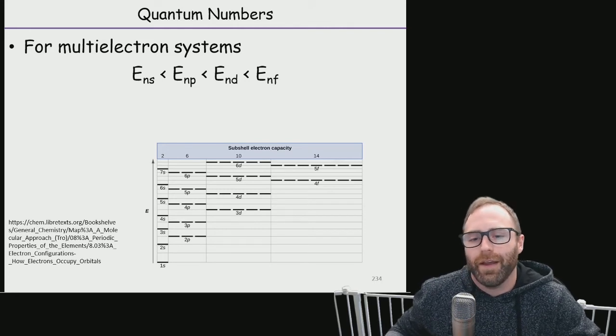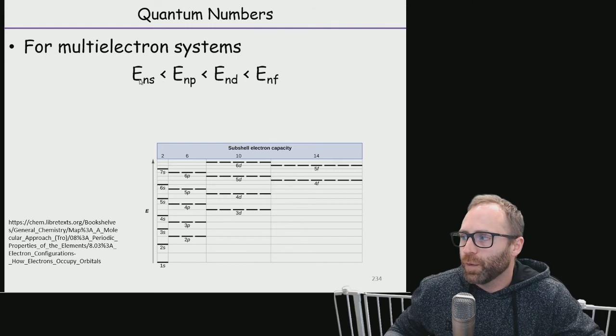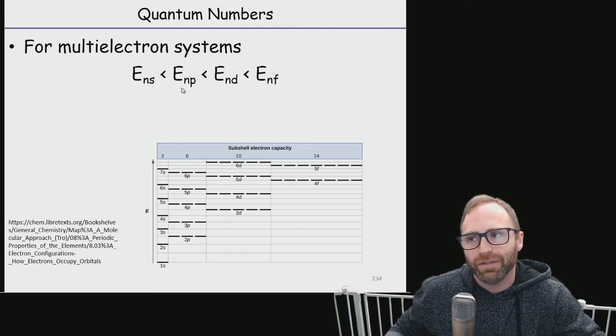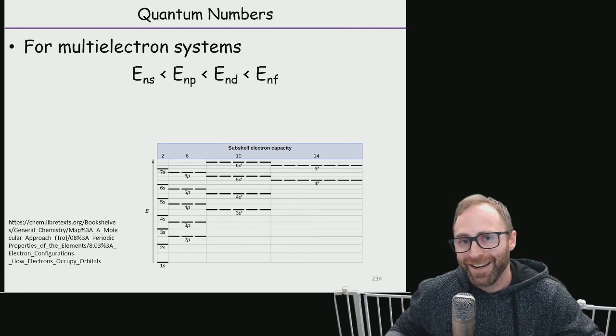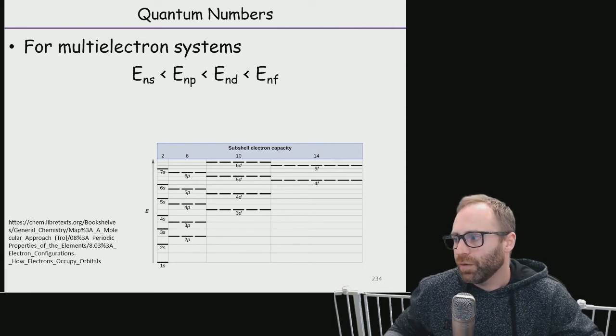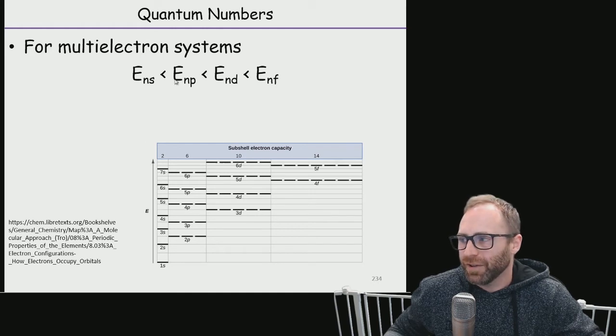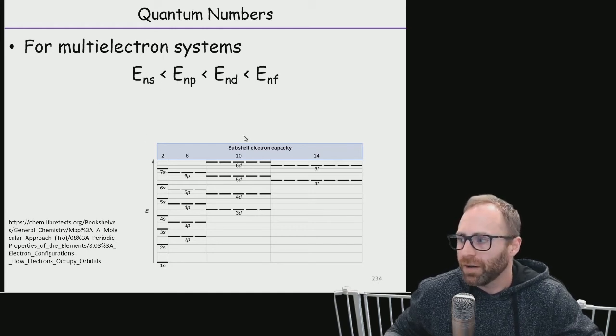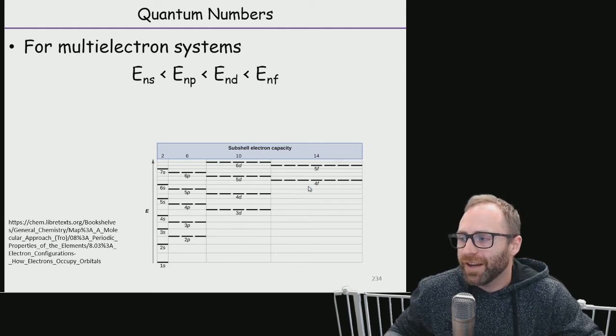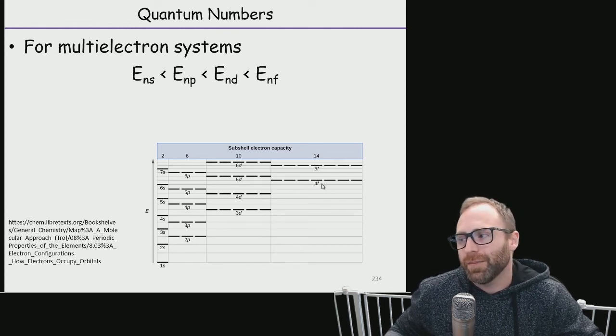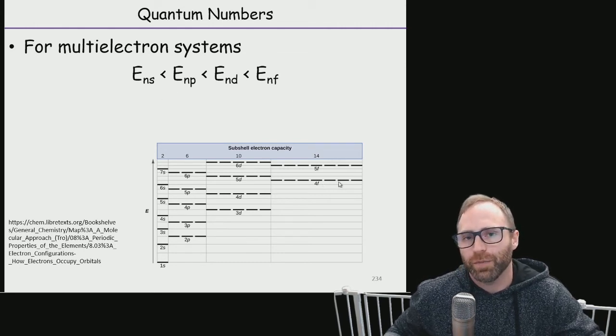The thing is though, for this guidance that we're giving you here, we're assuming that we're holding the principal quantum number n the same. So comparing 4s to 3d, this relationship up here doesn't work. But the 4s, 4p, 4d, 4f relationship does work. So for this kind of relationship, we have to be holding that principal quantum number the same.